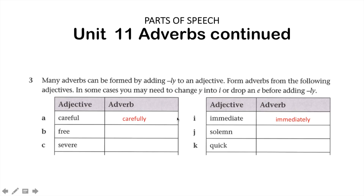Question number three. As you can see, we're just filling in the table. Many adverbs can be formed by adding the -ly to an adjective. Form adverbs from the following adjectives. In some cases you may need to change y into i, or drop an e before adding the -ly. For example, careful ends in l and we change that to carefully — we just add the -ly. If we've got immediate, we just add the -ly to make it immediately. Check which rule you need to use before you write your words into the boxes provided.